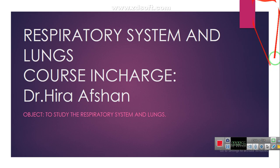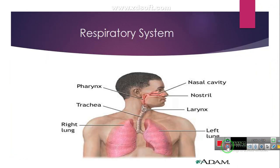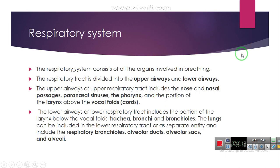Basically, the respiratory system consists of the nasal cavity, nostrils, pharynx, larynx, trachea, right lung, and left lung. This is the diagrammatic presentation of the respiratory system. The respiratory system consists of all the organs involved in breathing, and these organs help in the breathing process.